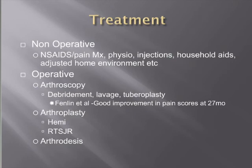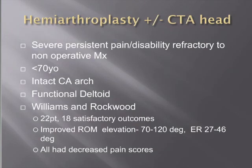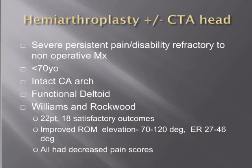Hemiarthroplasty is indicated for severe persistent pain and disability refractory to non-operative management, in patients under 70, who must have an intact coracoacromial arch and a functional deltoid. Williams and Rockwood, in one of the earliest series on hemiarthroplasty for cuff tear arthropathy with 22 patients, found 18 satisfactory outcomes. They improved range of motion from 70 to 120 degrees of elevation and external rotation from 27 to 46 degrees — essentially moving patients from non-functional to functional range of motion — with significant improvements in pain scores.